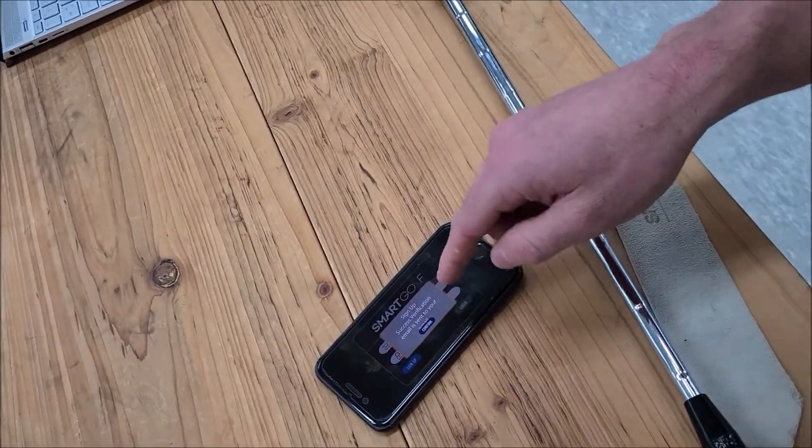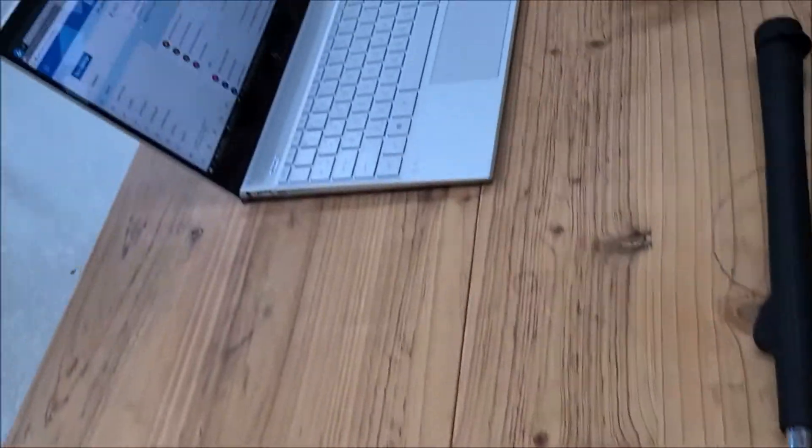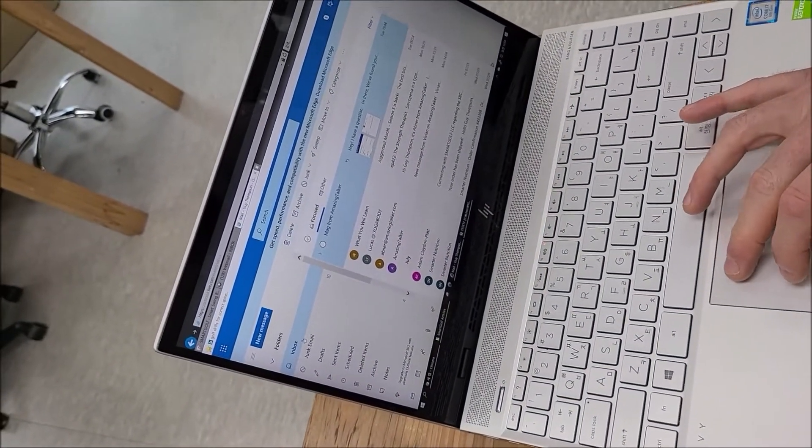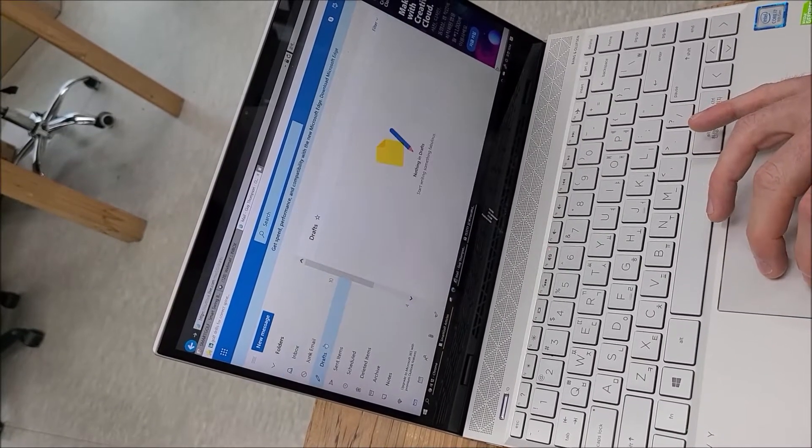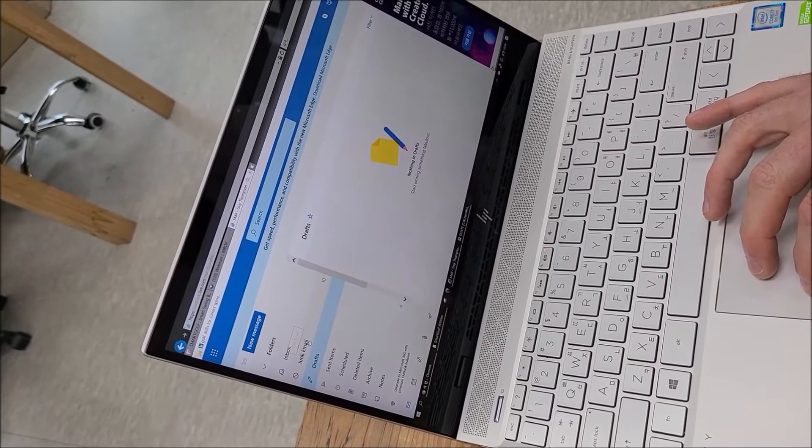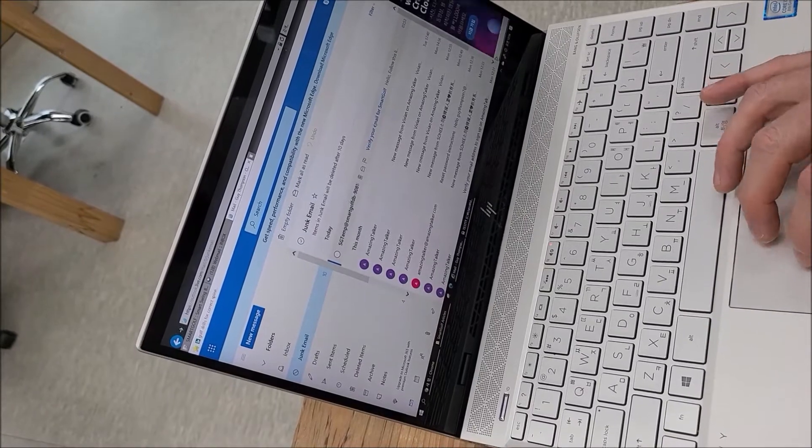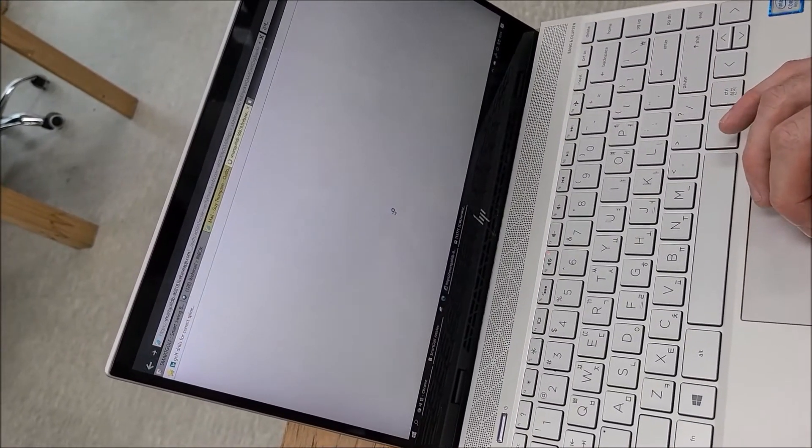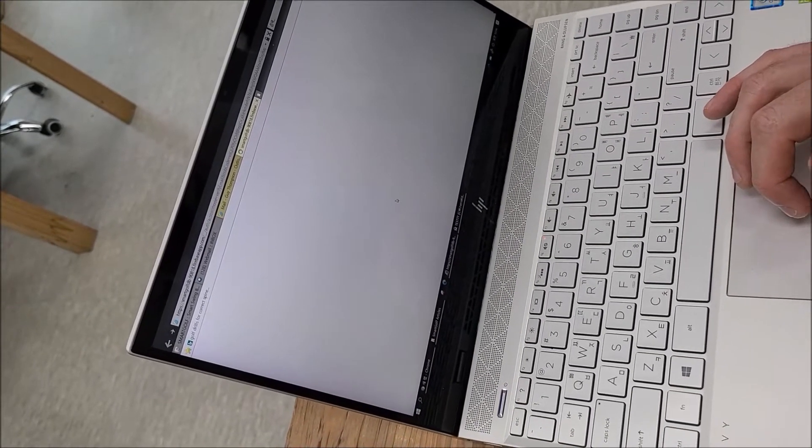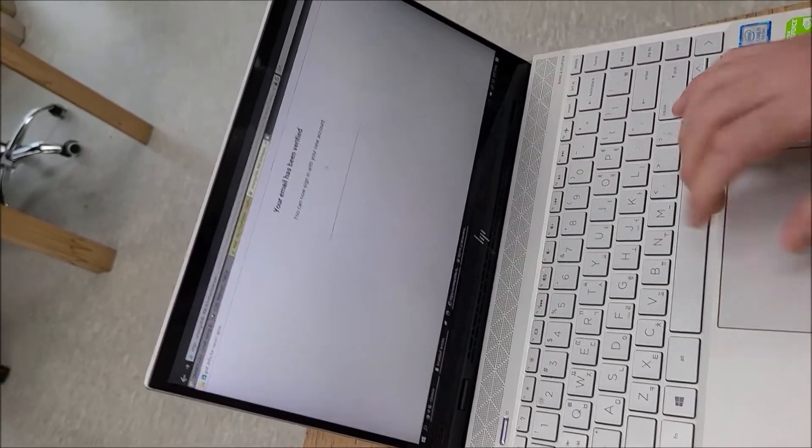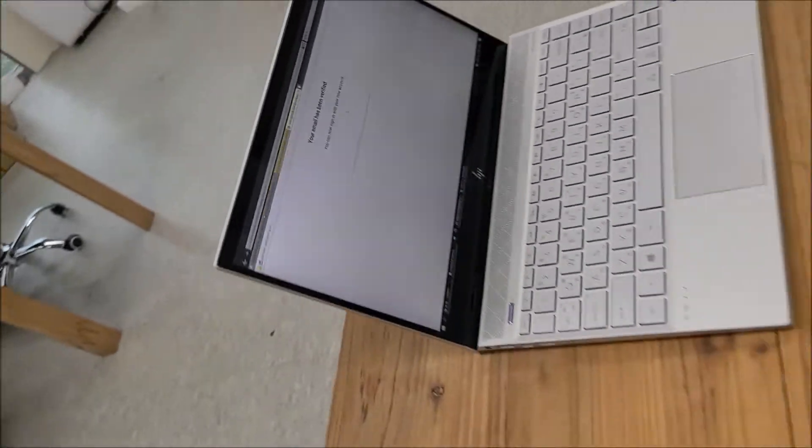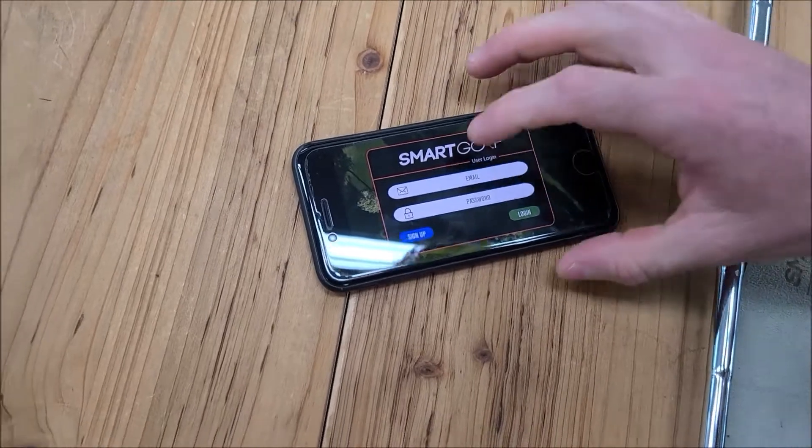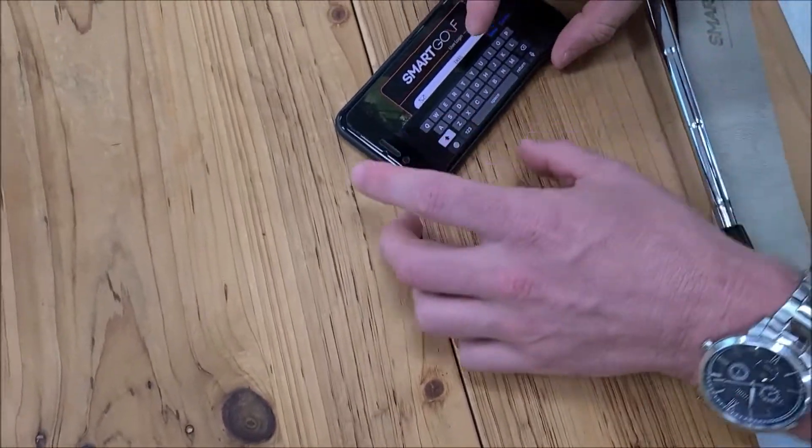Now we need to confirm our email. Let's check Hotmail. There we go - verify your email for Smart Golf. We click the link, and now my email has been verified. I can confirm here and sign in with my new account.